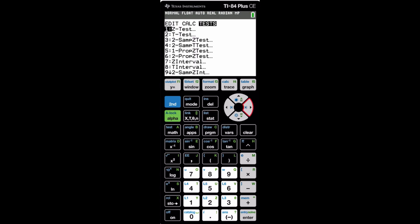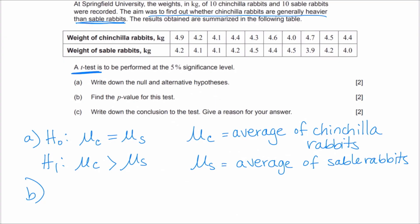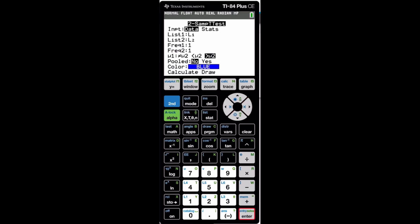Now we go to stat, test. We're going to go down to option four, two-sample t-test. We have entered data. Our data list one is L1, list two is L2. The frequency list, there's only one of each number. This is where you have to choose your alternative hypothesis. If you remember, we said the alternative hypothesis is that the chinchilla, which is our first group, is greater than the sable rabbits. So on the calculator, we have to choose greater than. We're saying that the mean of group one is greater than the mean of group two. Pooled, yes. Always yes for the AI exam and then press calculate. From here, the p-value is 0.0408.